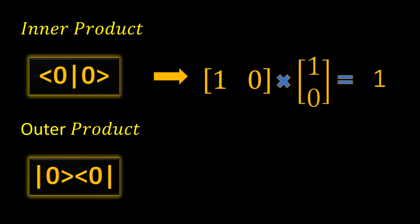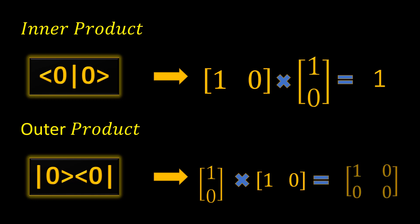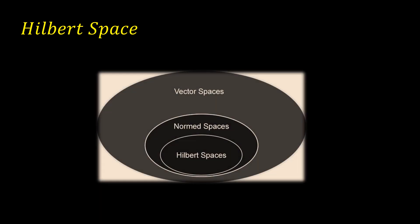If you work out the matrix multiplication, that's what you get. For the outer product, this is how you represent it using Dirac notations, and again here's how the matrix multiplication goes. Know that these concepts will come really handy going forward: inner product relates to measurement and fidelity, whereas outer product comes in handy when working out quantum gates.